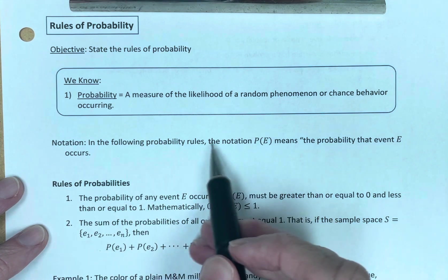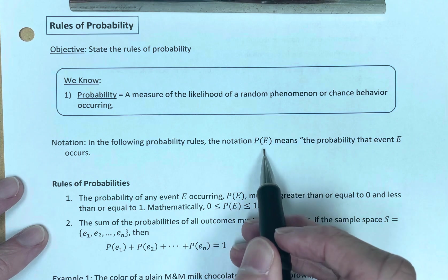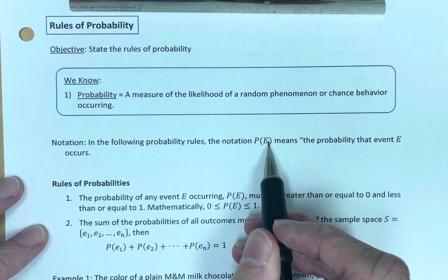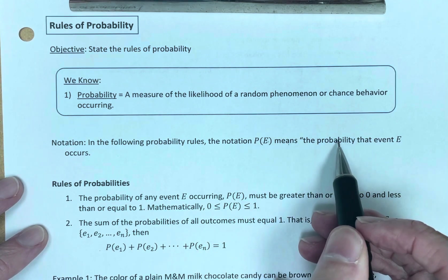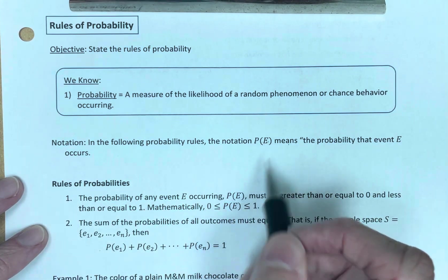In the following probability rules, the notation P with the E in parentheses, probability of E. This means the probability that event E occurs, probability of E happening.